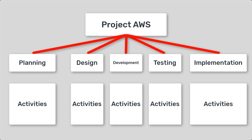In some cases, it might be needed to further decompose the project to the subtask level. Subtasks provide a more detailed breakdown of the activities required to complete tasks. The WBS helps in organizing and managing the project by providing a clear structure and defining the relationships between different components.